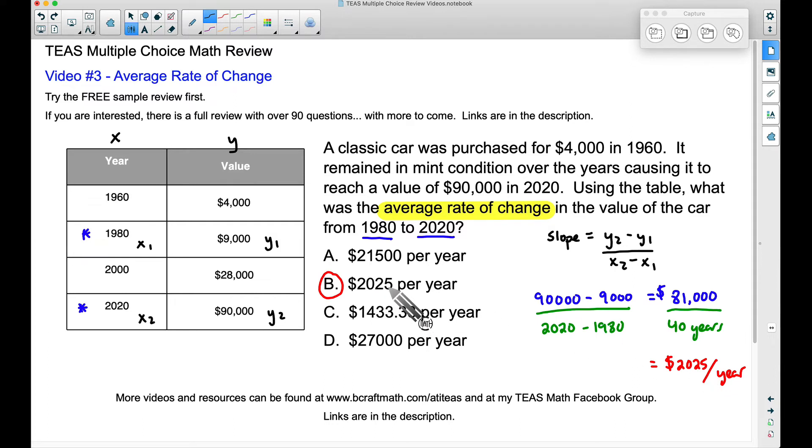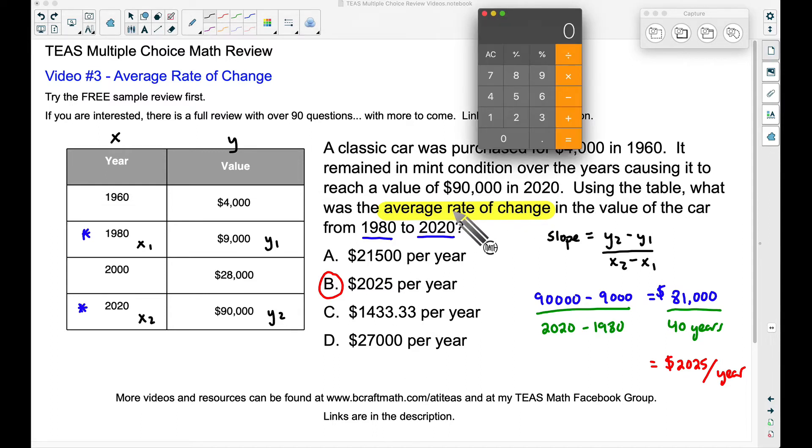But now, let me show you where you could make some mistakes. If you did not read this question carefully and say you found the average rate of change from 1960 to the year 2020. So a mistake you would make there is you would take the $90,000 minus the $4,000. Taking $90,000 and subtracting $4,000, we have an appreciation value of $86,000. And then if we divided that by the amount of time from 1960 to the year 2020, the difference between 2020 and 1960, that is a difference of 60 years. So if we divide this by 60, look at this value. $1,433.33. That is one of our answer choices. So you have to be careful and make sure you're looking at the right time period.